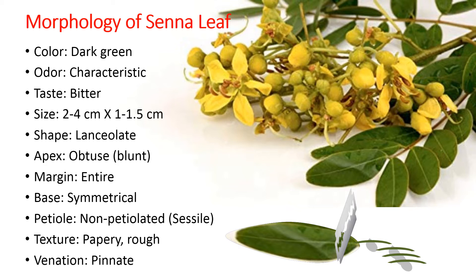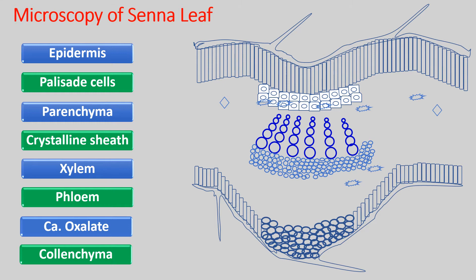The sections have both a lamina and a midrib attached to it. The microscopy of Senna leaves shows various different kinds of tissue. These include epidermis, palisade cells, parenchyma, crystalline sheath, xylem, phloem, calcium oxalate crystals, and collenchyma. We will have a look at them one by one, arranged from the periphery — that is, from the upper side towards the lower one.